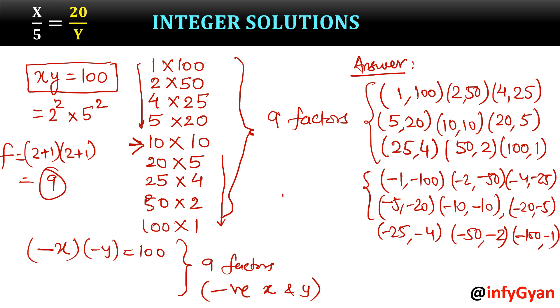So total 18 ordered pairs are possible — 9 positive and 9 negative. If you like this video, please do subscribe to my channel. Thank you so much for watching.